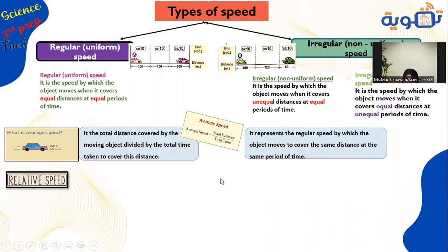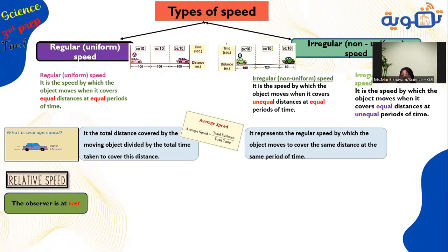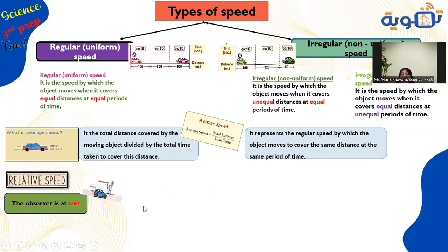Relative speed: it is the speed of a moving object relative to a static or moving observer. A static observer means the observer is at rest. Like a traffic officer with a radar — the radar gives the exact real speed of your car. When the observer is at rest, the relative speed equals the actual real speed.